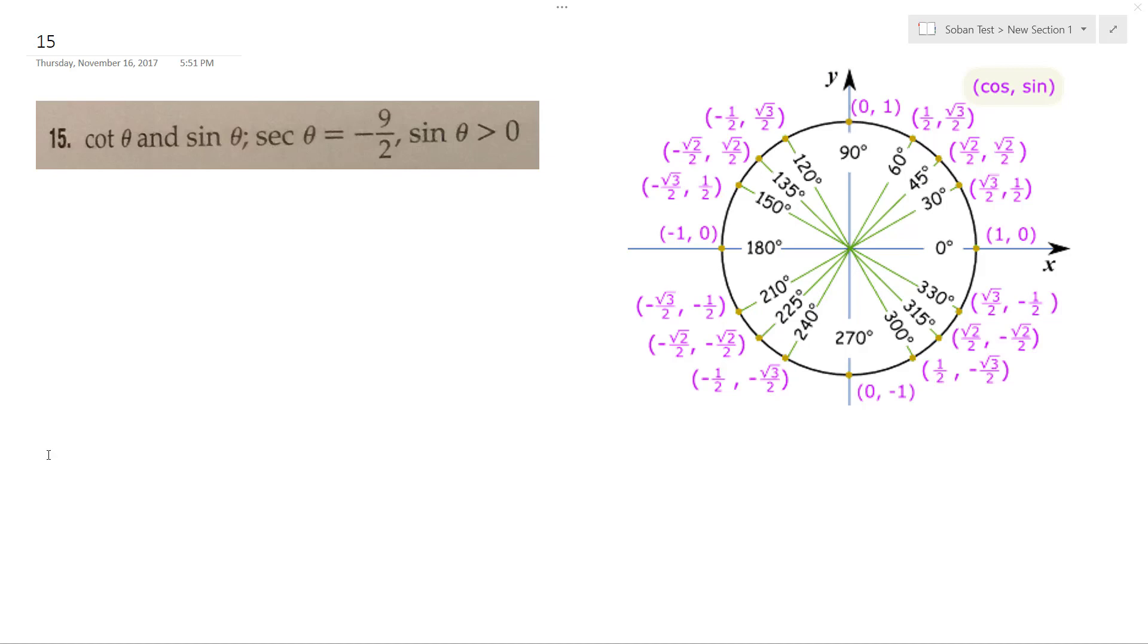Alright, so we want to find the cotangent and sine based off of the fact that the secant is equal to negative 9 over 2, which is essentially 1 over cosine. So that's negative, but the sine is going to be positive, so this is going to take place in quadrant 2.